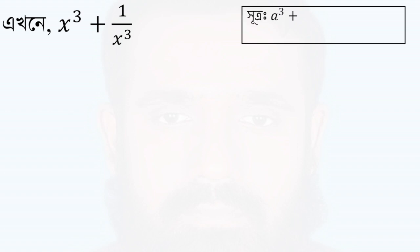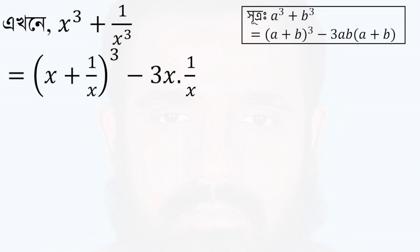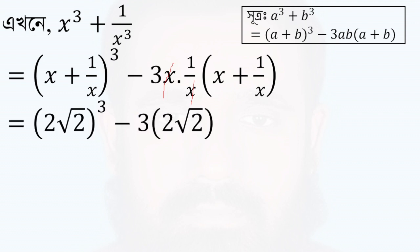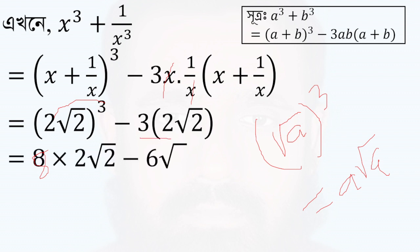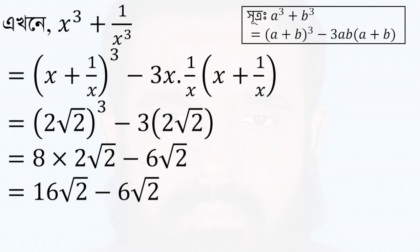For x cubed plus 1 by x cubed, we use the identity a cubed plus b cubed equals a plus b whole cubed minus 3ab into a plus b. Here a is x and b is 1 by x. So x plus 1 by x whole cubed minus 3 into x times 1 by x into x plus 1 by x. x plus 1 by x equals 2 root 2, so 2 root 2 cubed minus 3 gives us 16 root 2 minus 6 root 2, equal to 10 root 2.